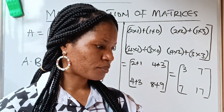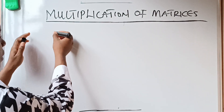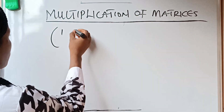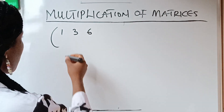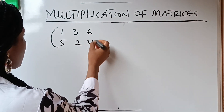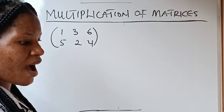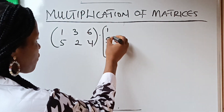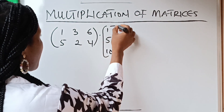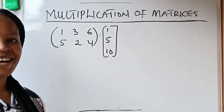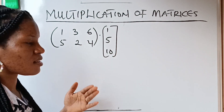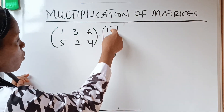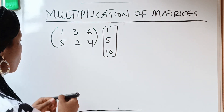Let's do one more example. What if you are asked to simplify: we have the matrix [1, 3, 6; 5, 2, 4] multiplied by the column [1, 5, 10]? Once you know that when you multiply one row and one column you form one number, it will be easy to solve.